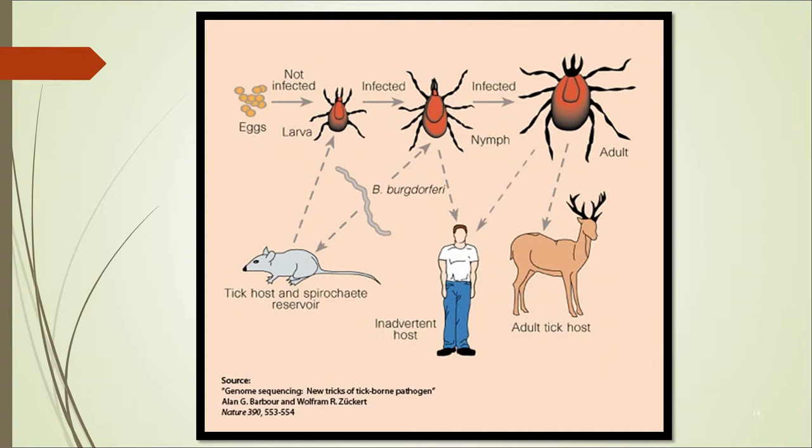Larvae and nymphs typically become infected with Lyme disease bacteria when they feed on infected small animals, particularly the white-footed mouse. The bacteria remain in the tick as it changes from larvae to nymph or from nymph to adult. Infected nymphs or adult ticks then bite and transmit Lyme disease bacteria to their host.